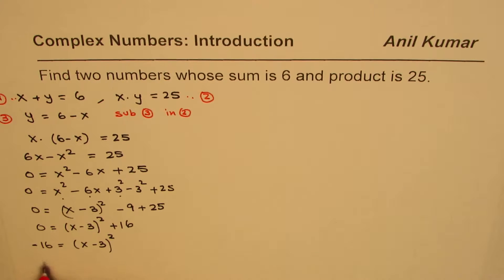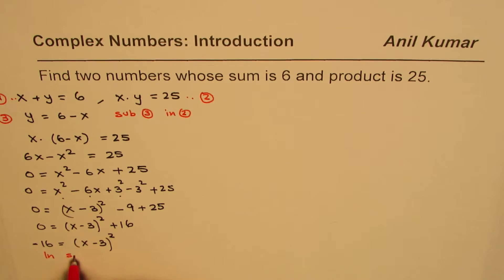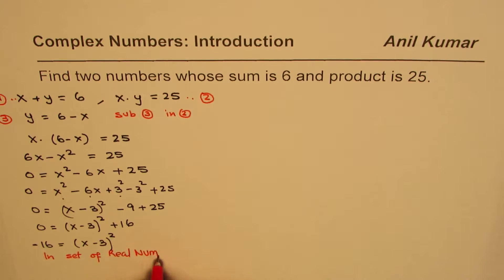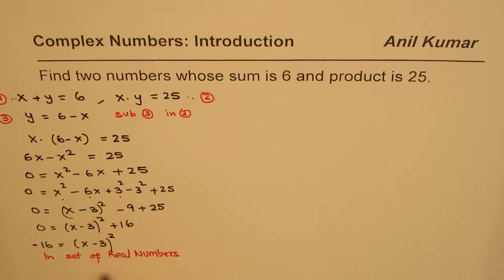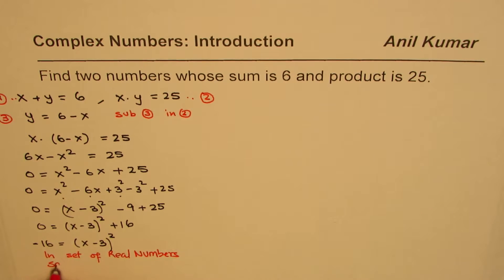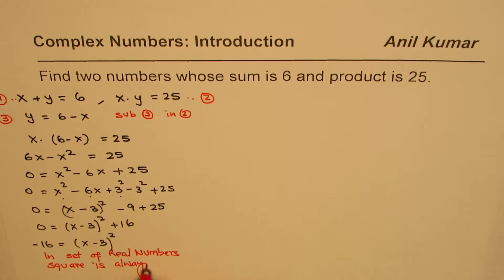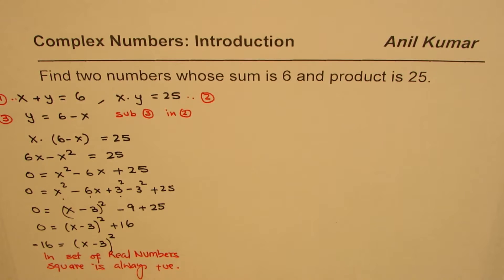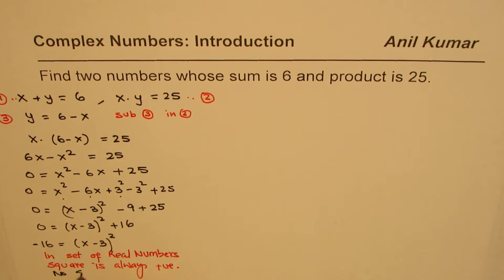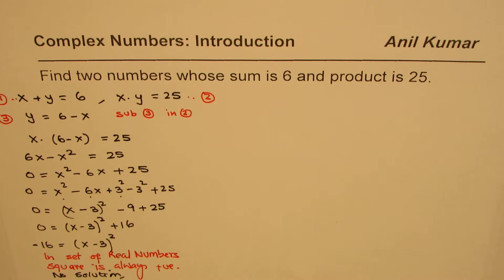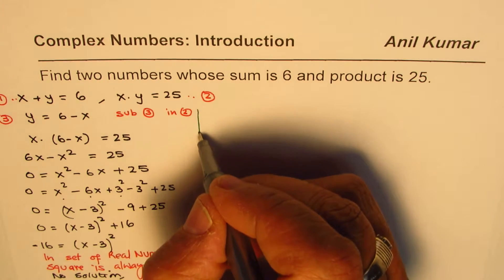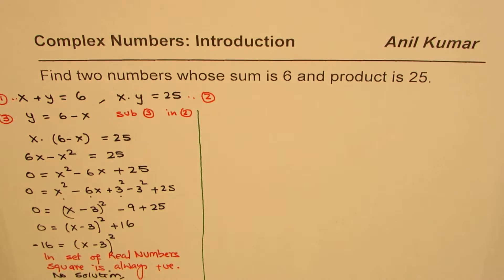At this stage, in the set of real numbers we would stop, because a square is always positive — never negative. So we would say: no solution. That is the place where we stopped and gave up when working within real numbers.